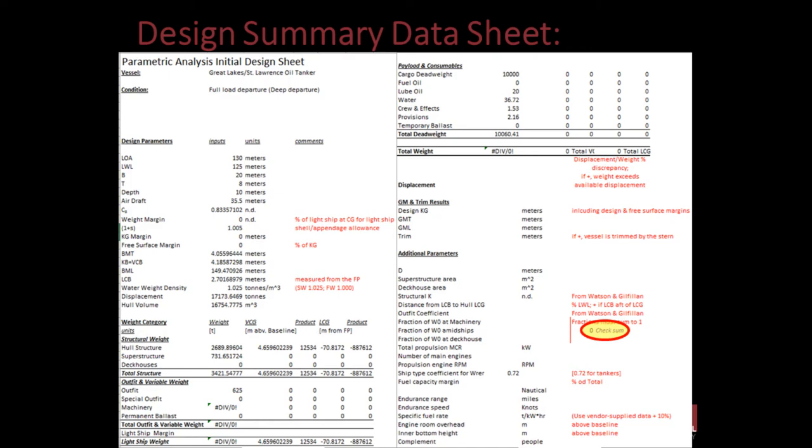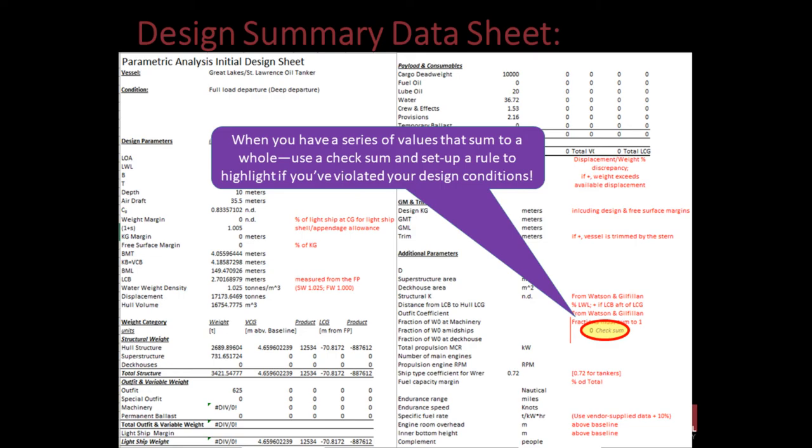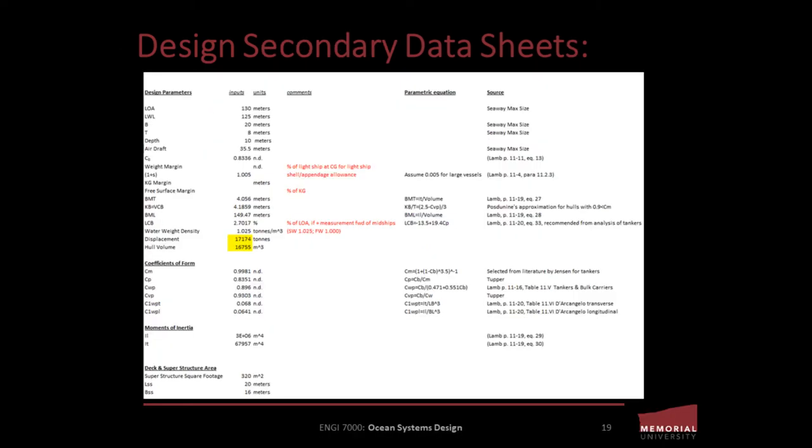Now, I've laid out my summary page in terms of principle design parameters, weights, volumes, and centers, and resistance and propulsion characteristics. Then, I've combed through various sources of parametric equations and identified the equations that are best suited for the vessel size range and operational profile I'm interested in designing for.